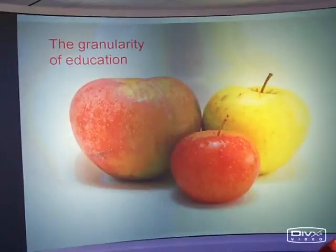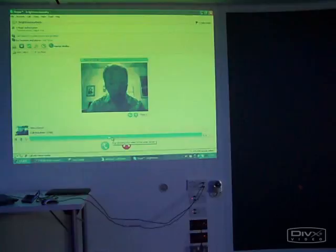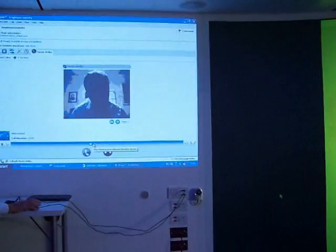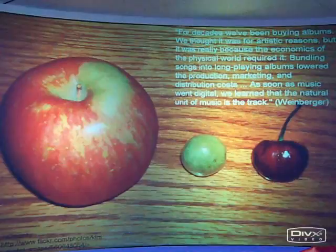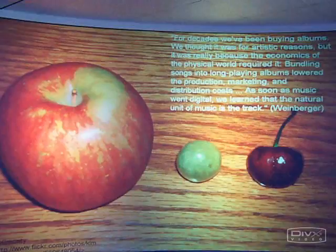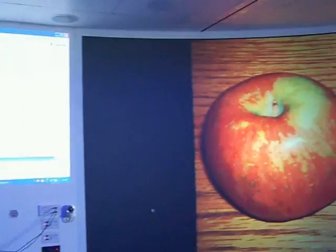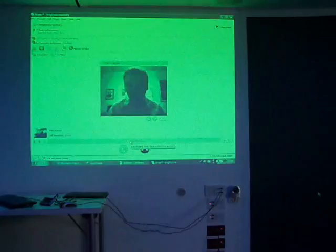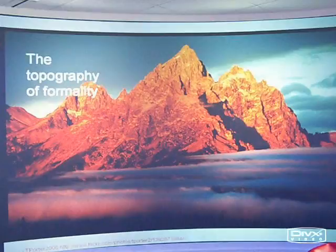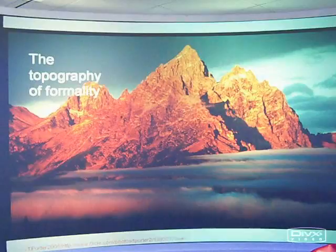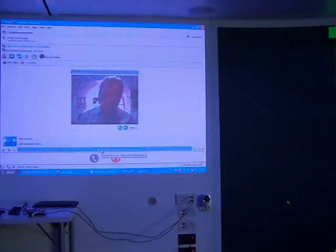We tend to squash or stretch everything into a semester because that's how universities are set up to run. Maybe we mess around with cohort sizes a bit, but basically we're talking about different-sized apples. Maybe we want different types of fruit, not just different sizes — and actually that structure was driven by the economics of operating in a physical world. You needed to wrap things up, ship them, and sell them. As soon as music went digital, we learned that the natural unit of music was the track. I don't think there's a natural unit of learning, but it probably comes in many different sizes — from ten minutes to nine months. But at the moment we're limited by our physical structure. If you imagine formalised learning as a landscape, it's basically flat, with a couple of really sharp peaks when you do undergrad or postgrad study, and then flat again.